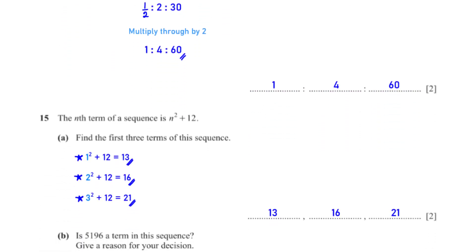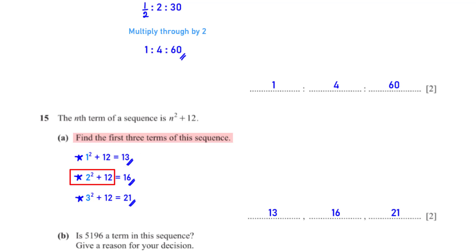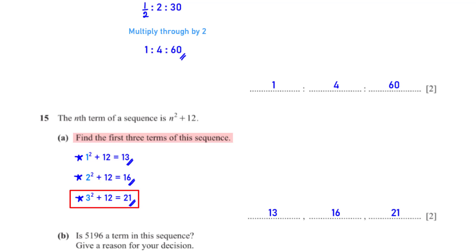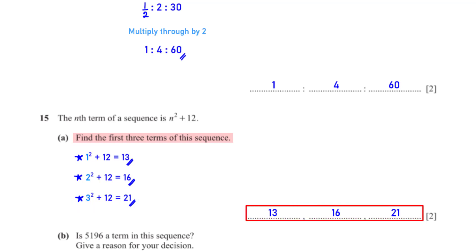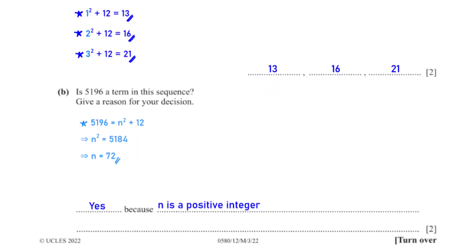The nth term of a sequence is n² + 12. Find the first three terms. For the first term (n = 1): 1² + 12 = 13. For the second term (n = 2): 2² + 12 = 16. For the third term (n = 3): 3² + 12 = 21.